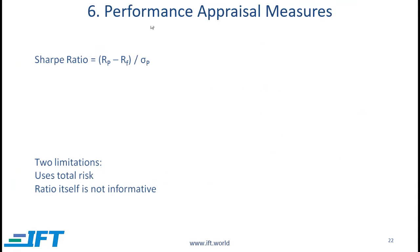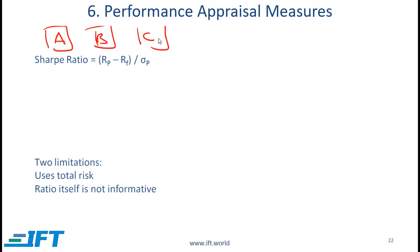Moving now to Performance Appraisal Measures. Imagine you have a lot of money and you give it to three different investment managers, splitting your funds between them and asking them to manage your money. Clearly you would be interested in how these managers perform, and to evaluate their performance you need some measures. The sorts of measures we will talk about here are based on capital market theory. On this particular slide, we'll talk about the Sharpe ratio and the Treynor ratio.